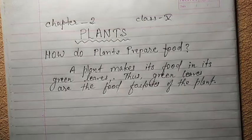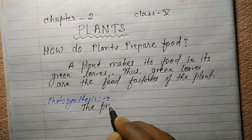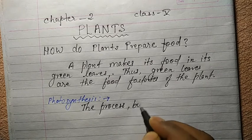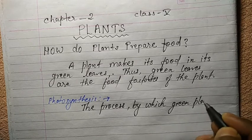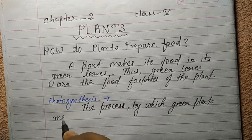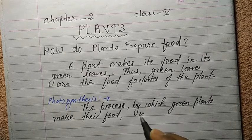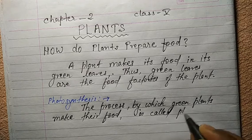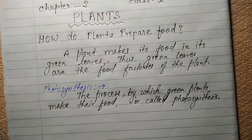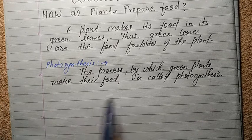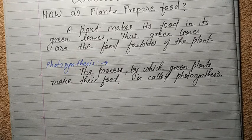So how can we define photosynthesis? Here is the definition: the process by which green plants make their food is called photosynthesis. You can easily learn the definition of photosynthesis — the process by which a green plant makes their food is called photosynthesis.